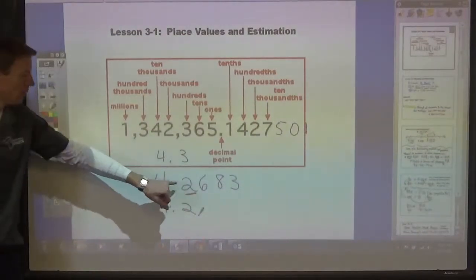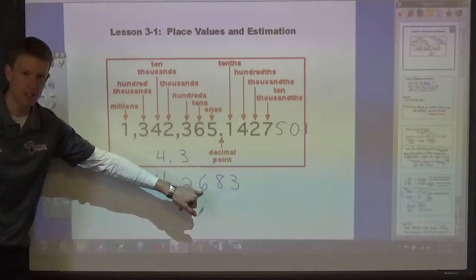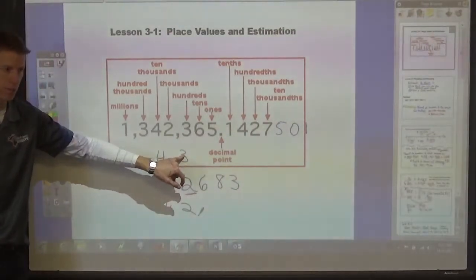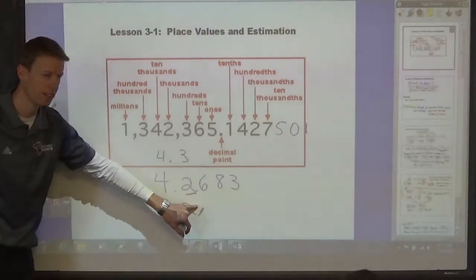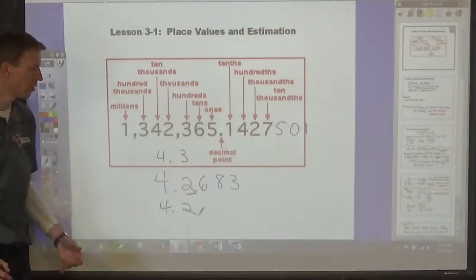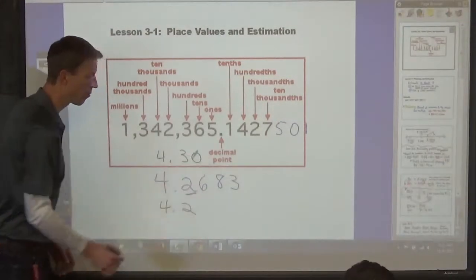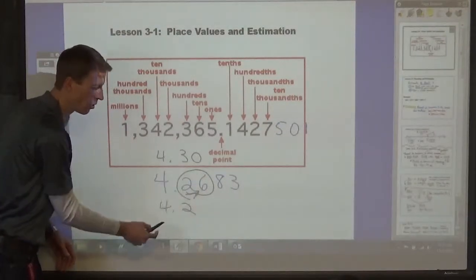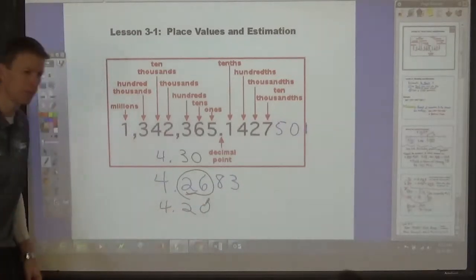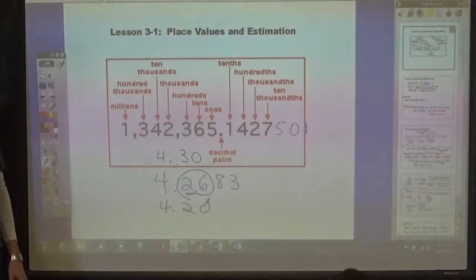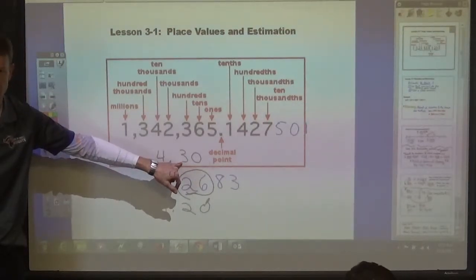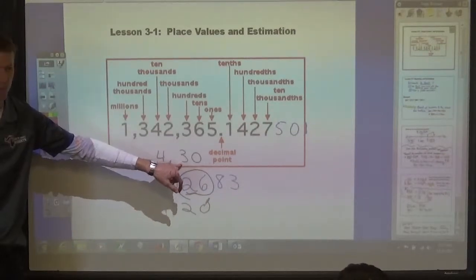And so, this place determines, the hundreds place determines, if it's closer to four point three or four point two. Since six is closer to four point three oh, you look at this together, you can see four, twenty-six is closer to thirty than it is to twenty. And so, this would round to four and three tenths.